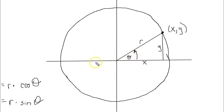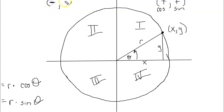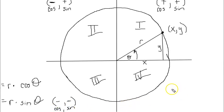So x is the horizontal distance — what cosine measures — and y is the vertical distance — what sine measures. Regarding the quadrants: in the first quadrant all points are positive, so both cosine and sine are positive. In the second quadrant the x is negative and y is positive, so cosine is negative and sine is positive. In the third quadrant both are negative, so both cosine and sine are negative. In the fourth quadrant x is positive and y is negative, so cosine is positive and sine is negative.